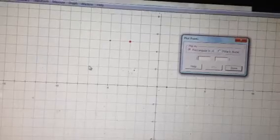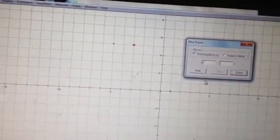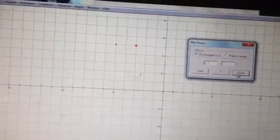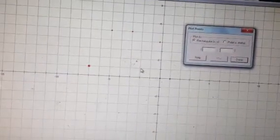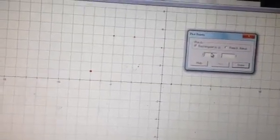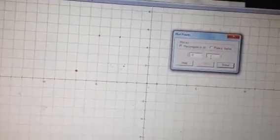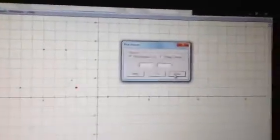Extend it down here at negative 7 on the x-axis and positive 1 on the y, and another coordinate here at negative 2 and 1 on the x-axis, on the y-axis rather, plot. Click done.